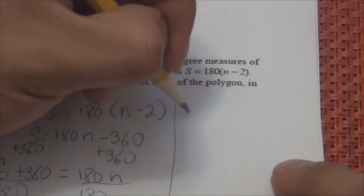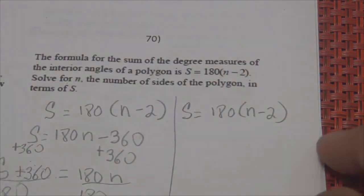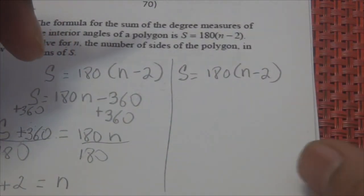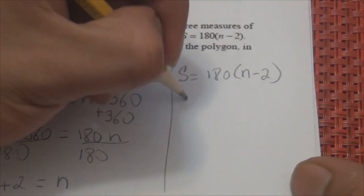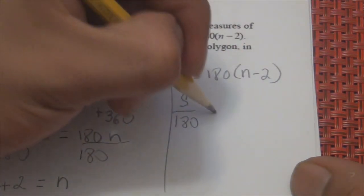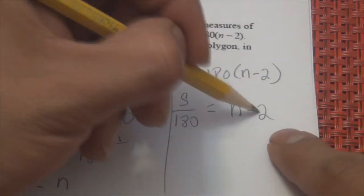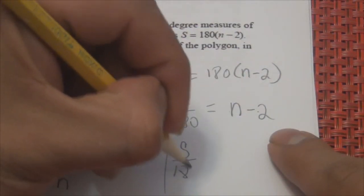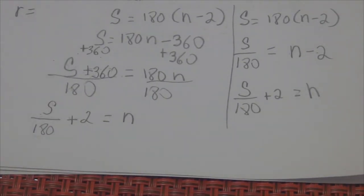The other way: starting from S equals 180 times (N minus 2), the whole thing is multiplied by 180, so divide by 180. S over 180 equals N minus 2. Then add 2 to both sides: N equals S over 180 plus 2. Same result — two methods, same answer.